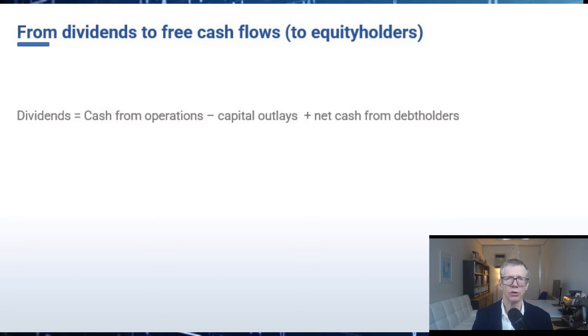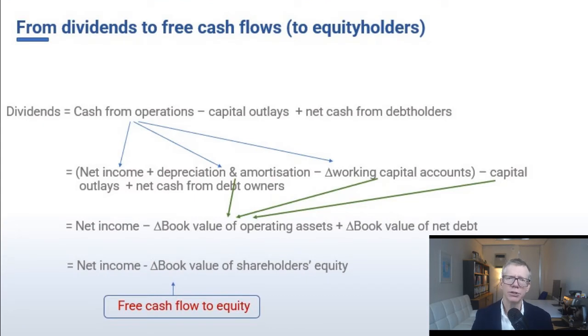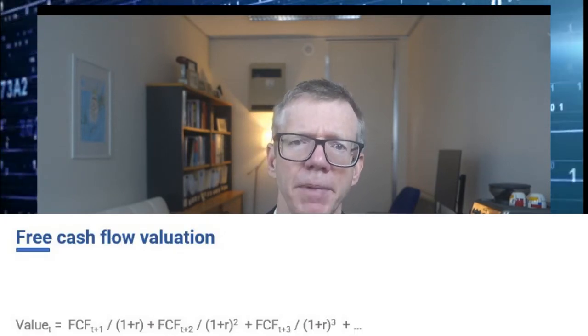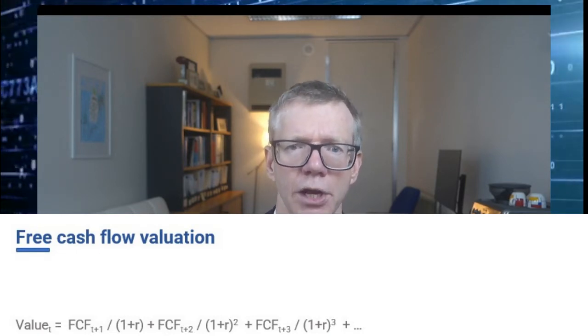We can move from dividends to free cash flows to equity holders by considering dividends as the amount that could be paid out to shareholders once we consider what cash the firm can generate from its operations, adjusted for the cash required for working capital and investing activities and any changes in net debt. This is the same as taking net income and adjusting for the change in the book value of operating assets and the change in net debt over the course of the year.